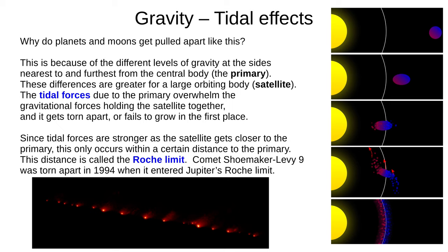Comet Shoemaker-Levy 9 was torn apart in 1994, when it entered Jupiter's Roche limit. We can see this effect on the right. In the top picture, the satellite is far from the Roche limit and is more or less spherical. In the second picture it's close to the Roche limit and is visibly distorted, and the last three pictures show it at the Roche limit, being torn apart.